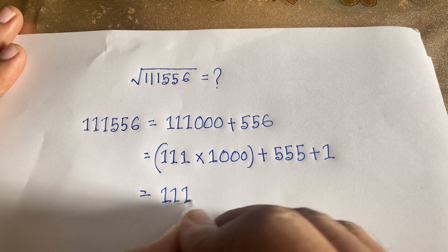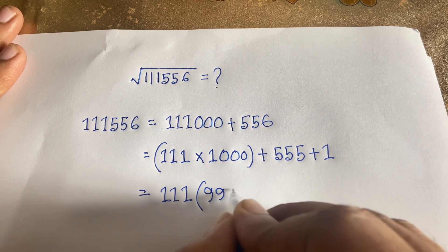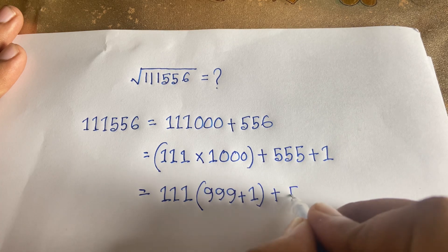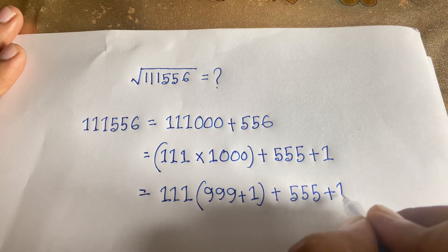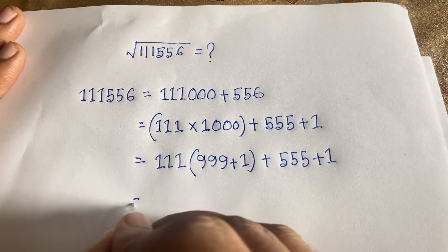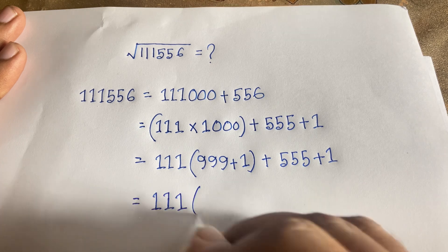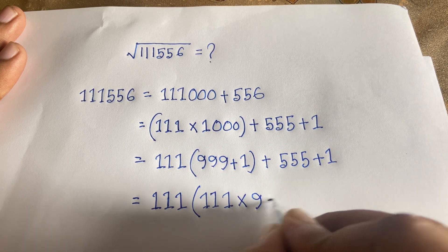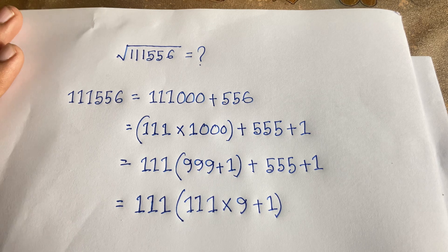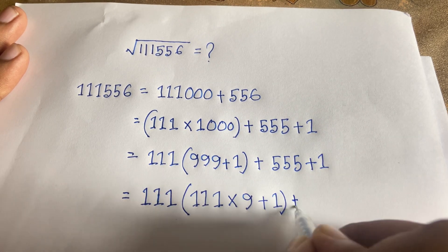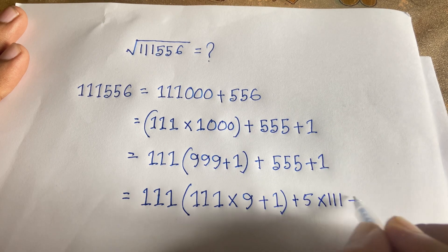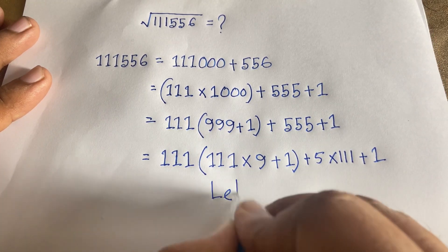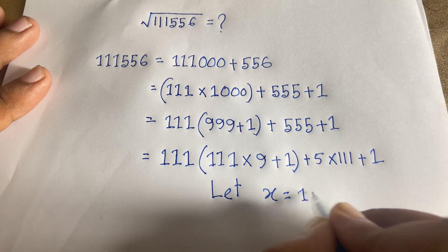Here we have 111 and 1000. I can see that 999 plus 1 equals 1000. And 555 plus 1 equals 556. Now I can see that 1111111 times 9 plus 1, and 555 equals 5 times 111 plus 1. Now let x equal to 111.